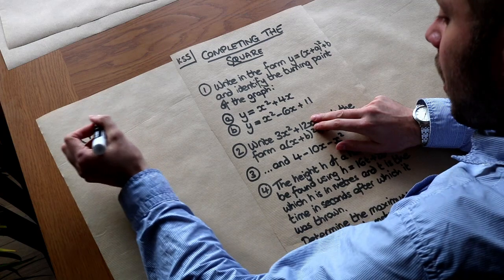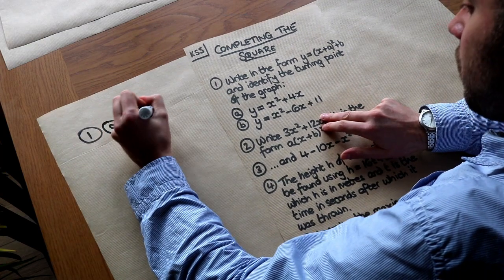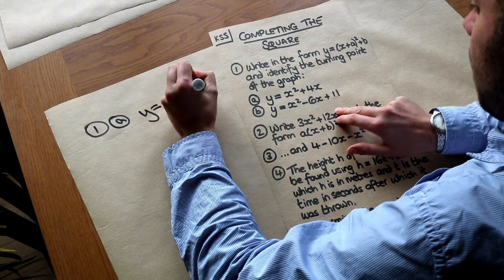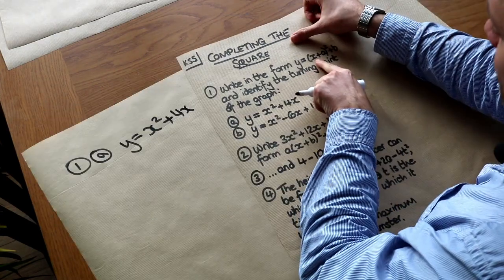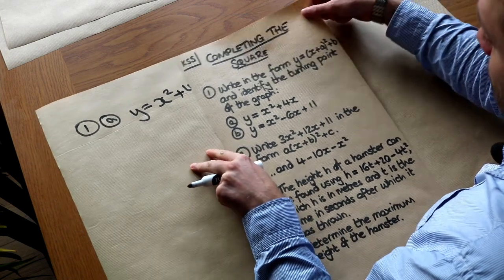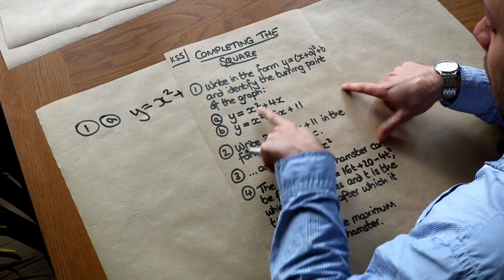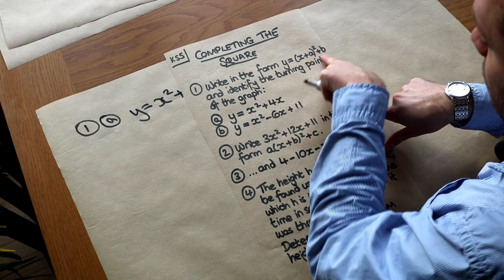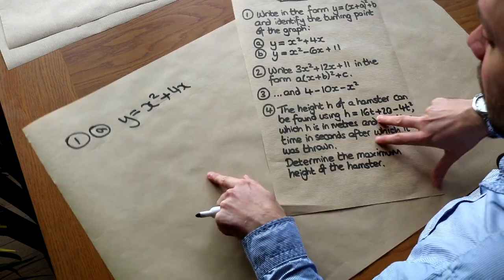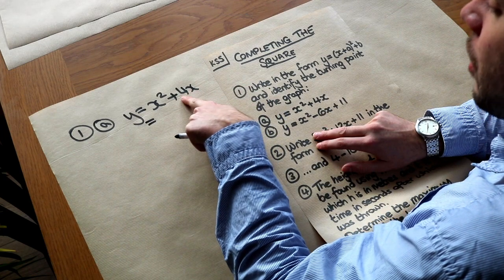Let's dive straight in with the first question: we want to write y equals x squared plus 4x in the form x plus a, all squared, plus b. Note that completing the square is not the same as factorising — if we write something in this form, it is not a factorised expression because it's not a product of expressions.